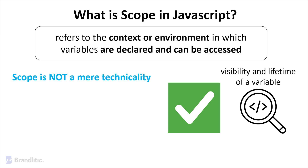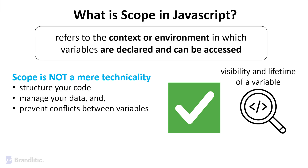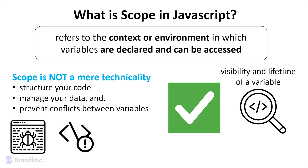First of all, scope is not a mere technicality. It profoundly influences the way you structure your code, manage your data, and prevent conflicts between variables. A lack of understanding of scope can lead to bugs, unexpected behaviors, and increased maintenance efforts, all of which can be avoided with proper comprehension and application of scope rules.